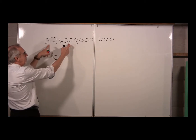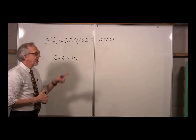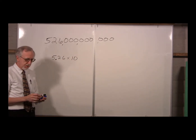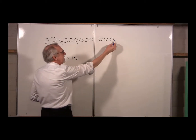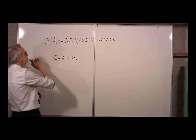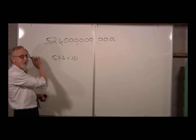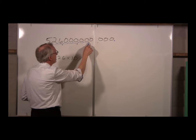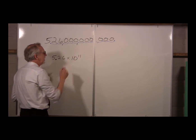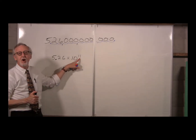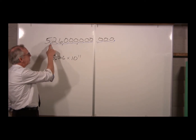Let's say this has three sig figs. To make 5.26 the same size as 526 billion, we multiply by 10 to a power that brings it back to the original size. There's a decimal point implied at the end of 526 billion. To bring 5.26 back to where it's supposed to be, we'd have to move the decimal point 1, 2, 3, 4, 5, 6, 7, 8, 9, 10, 11 places. So we multiply by 10 to the 11th power.